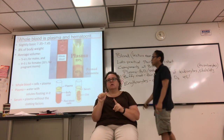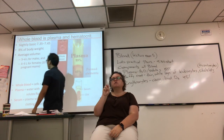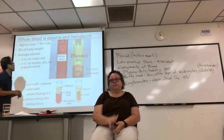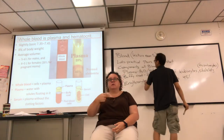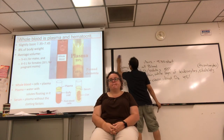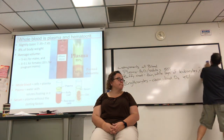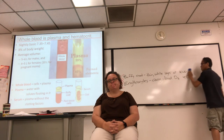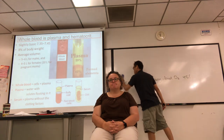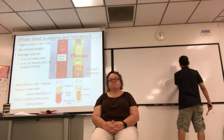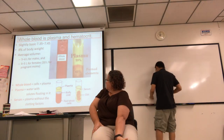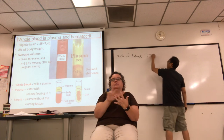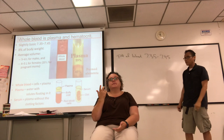Here's a picture of real blood spun down. You can see the straw-colored plasma on top when you fractionate the blood. Blood is slightly basic — 7.35 to 7.45 pH. The reason why there's a range is the difference between arterial blood and venous blood. Venous blood has a higher CO2 content, which tends to acidify the blood a little bit.